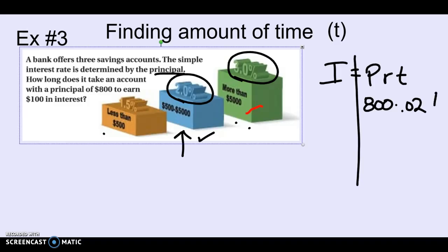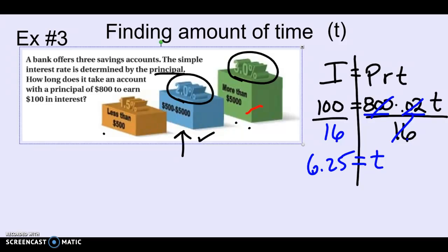So it looks like principal of $800, a rate of 2%. And I'm looking for the time, T. And I want my interest to be $100. So I'm going to multiply the 800 by 2% there so that I can divide and solve for T. So this and this multiplied together was 16. So I'm going to divide by 16 on both sides to cancel out and get T by itself. And it looks like T is 6.25. And then we would label that anytime we solve for T, it's going to be years. So 6 years and 3 months it would take for your account to earn $100 in interest. So that's solving for time.